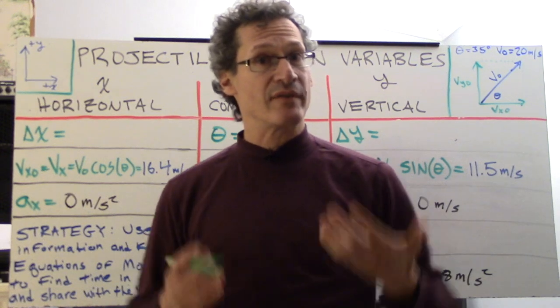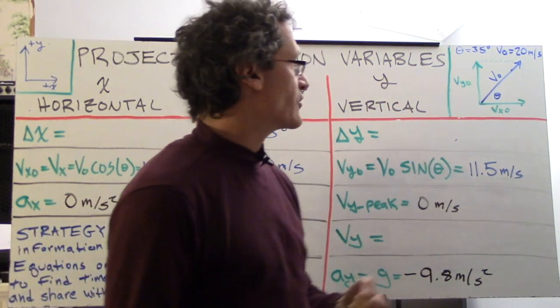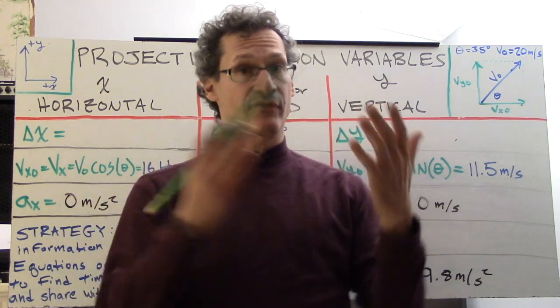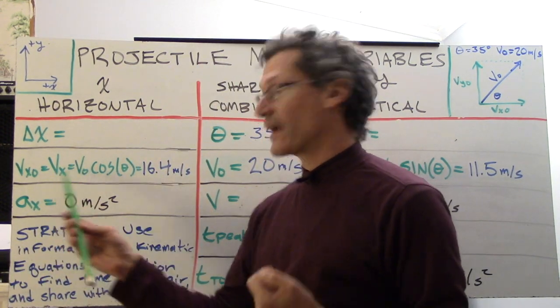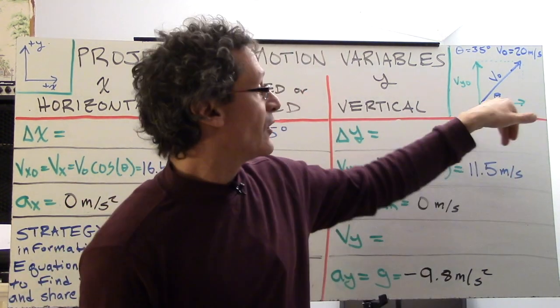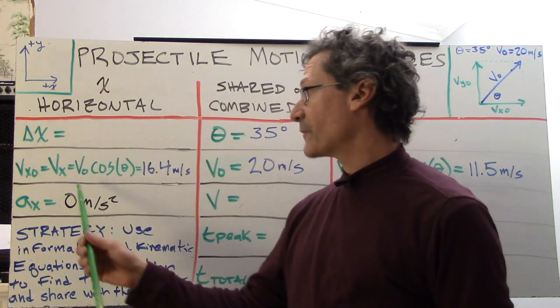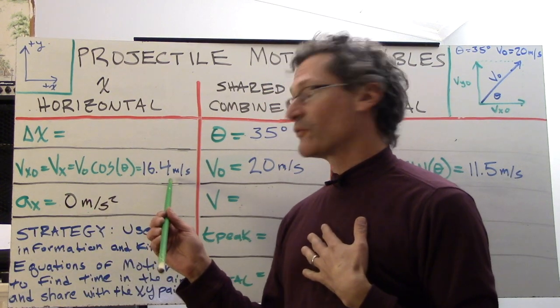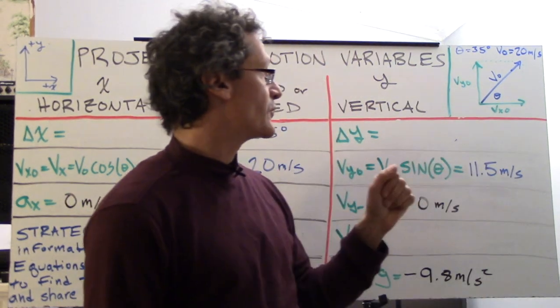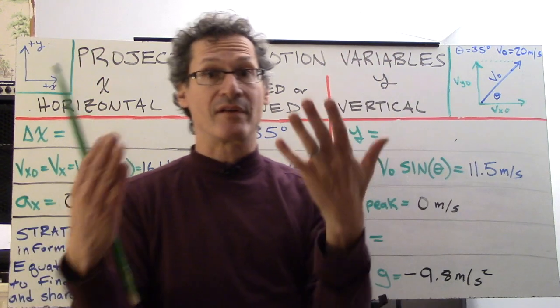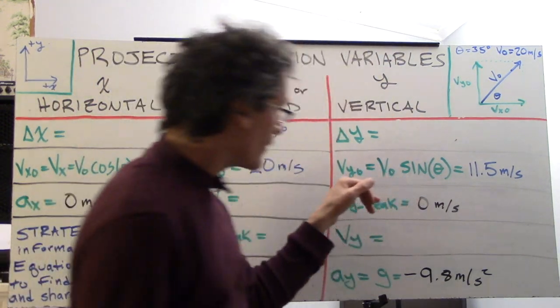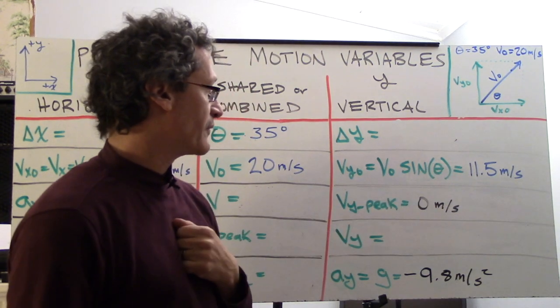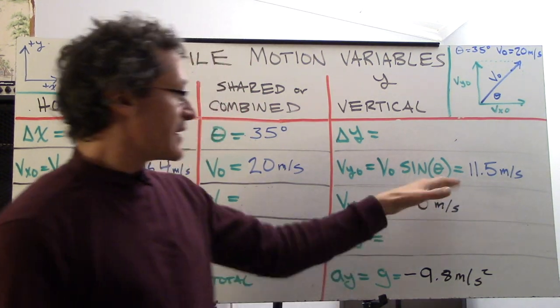Here it is drawn up here, angle 35, v-naught 20 meters per second. So we've got vx-naught and vy-naught components that break up this velocity at an angle. Remember that this is right triangle trigonometry that represents the vectors for velocity. So vx-naught, which is the adjacent side relative to this angle, v-naught times the cosine of the angle is vx-naught, which is 16.4 meters per second.